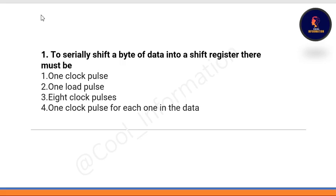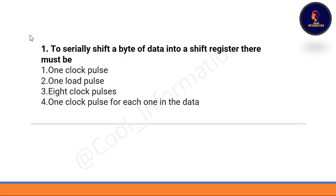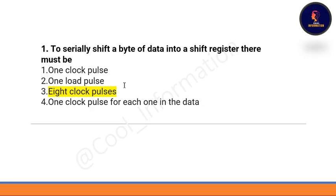Question 1: To serially shift a byte of data into a shift register, there must be — option A: one clock pulse, option B: one load pulse, option C: eight clock pulses, option D: one clock pulse for each one in the data. The correct option is C, which is eight clock pulses.